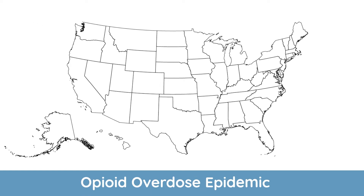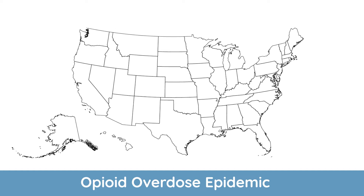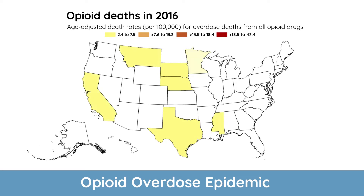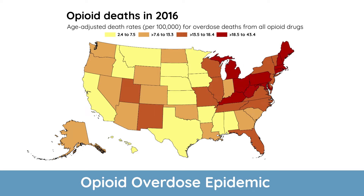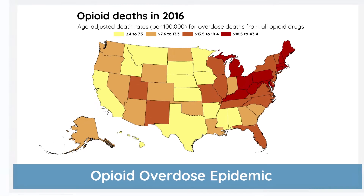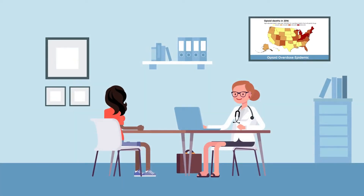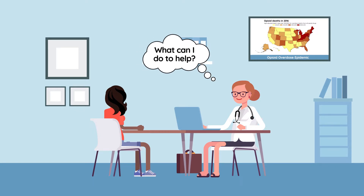While the opioid overdose epidemic originated in the late 1990s from an increase in the misuse of prescription opioids, it is currently largely driven by heroin and synthetic opioids. In 2016, opioids were involved in over 42,000 deaths, which was five times higher than reports indicated in the late 1990s. Like many providers across the nation, you may be seeing an increasing number of patients with opioid use disorder, and you're likely asking yourself: what can I do to help?